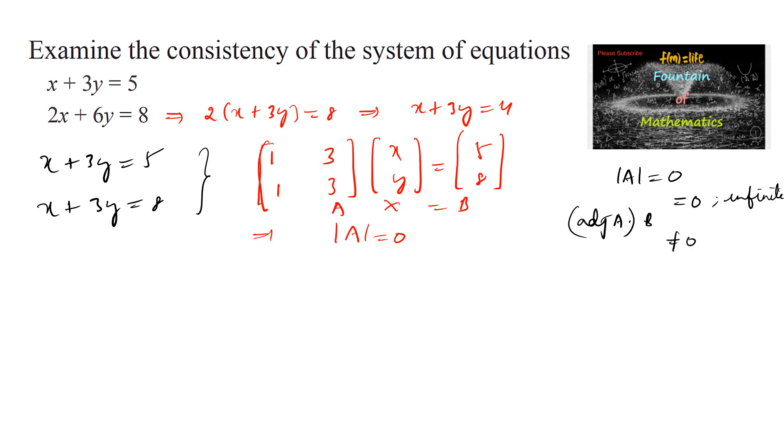So let us write adjoint of A into b. For a 2 by 2 matrix a, b, c, d, the adjoint of the matrix can be taken as interchanging the diagonal elements d and a, and interchanging the remaining elements minus b and minus c.